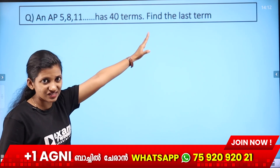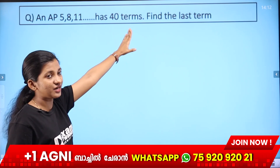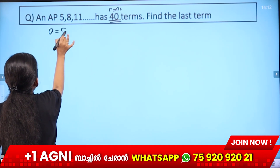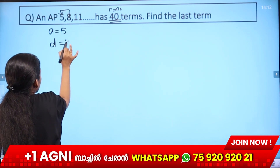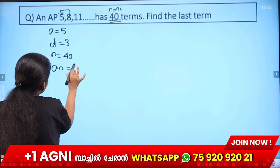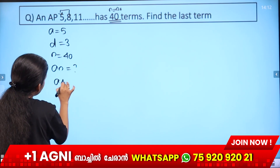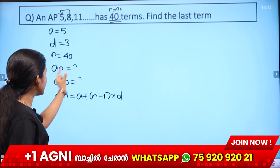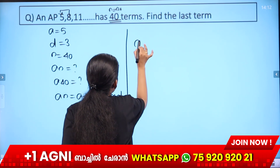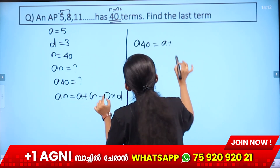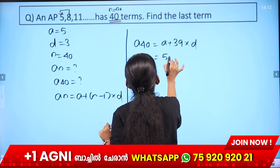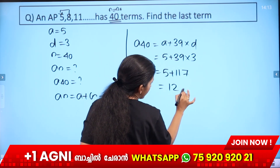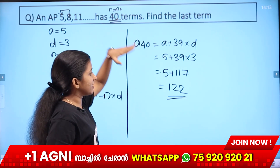Next problem: AP 5, 8, 11 has 40 terms — find the last term. Here n equals 40, first term a equals 5, and common difference d equals 8 minus 5 equals 3. So a40 = a + (40−1)d = 5 + 39 × 3 = 5 + 117 = 122. The 40th term is 122.